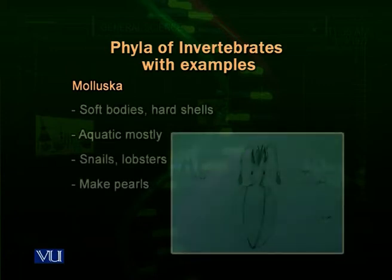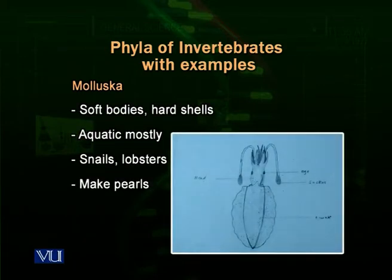Then comes the phylum Mollusca. These are organisms which have a soft body and a harder shell. It includes snails and lobsters. Certain lobsters make pearls for us, and different types of shells are used to make ornaments. This group is mostly marine and provides various products including ornamental products. Sometimes their soft bodies are also eaten by some people for medicinal purposes, and we also culture lobsters for making pearls.